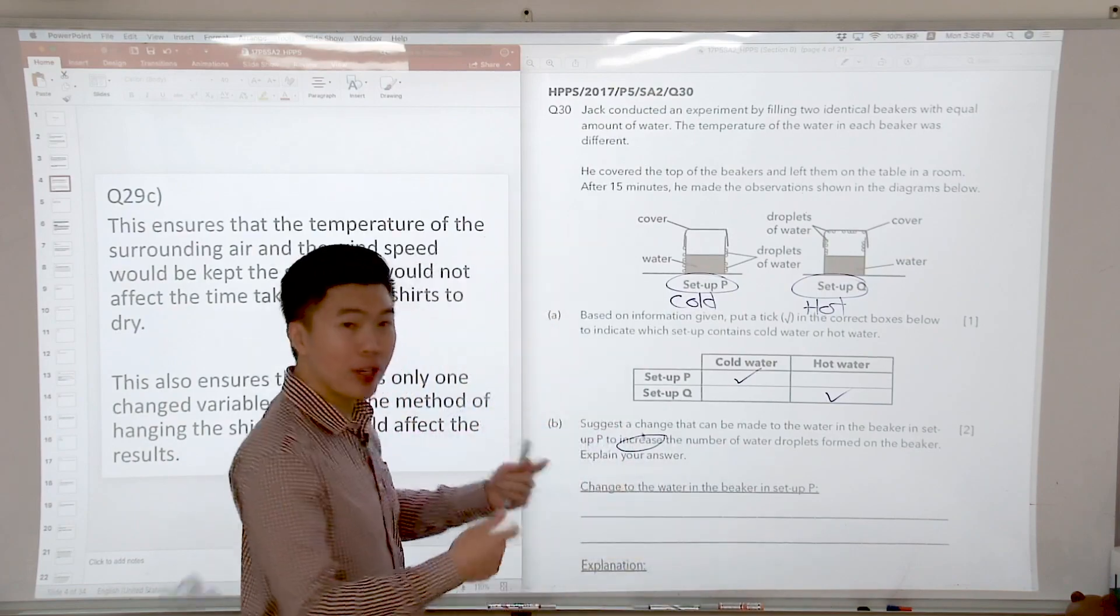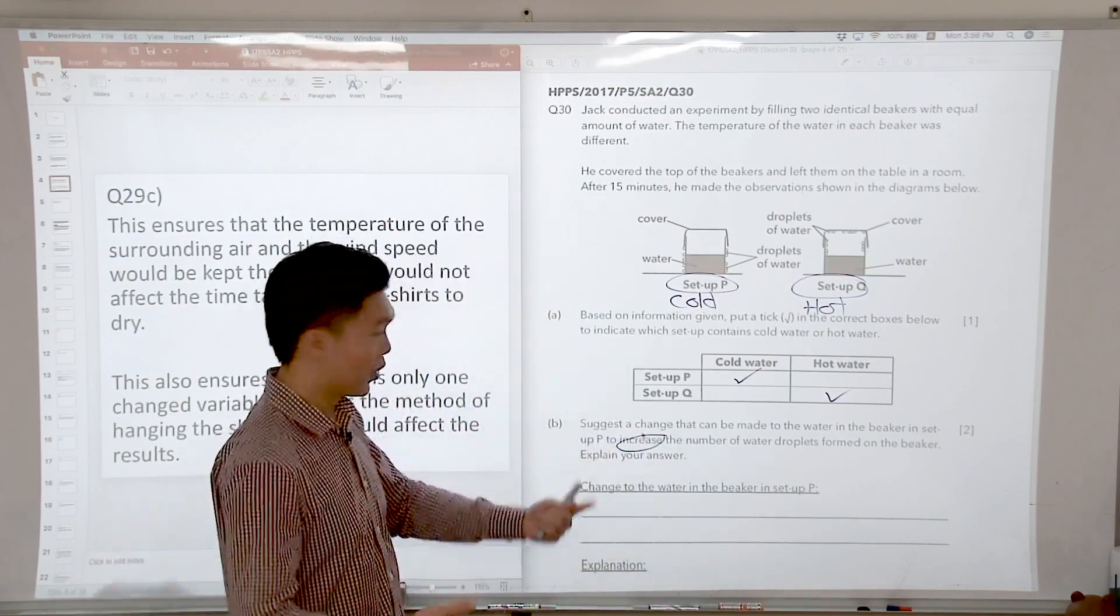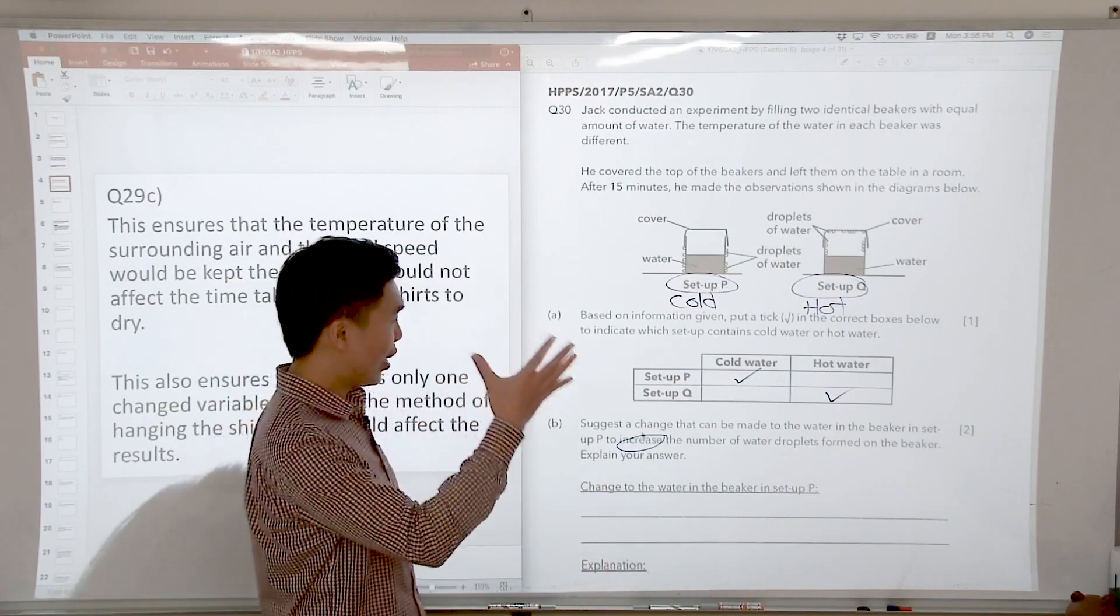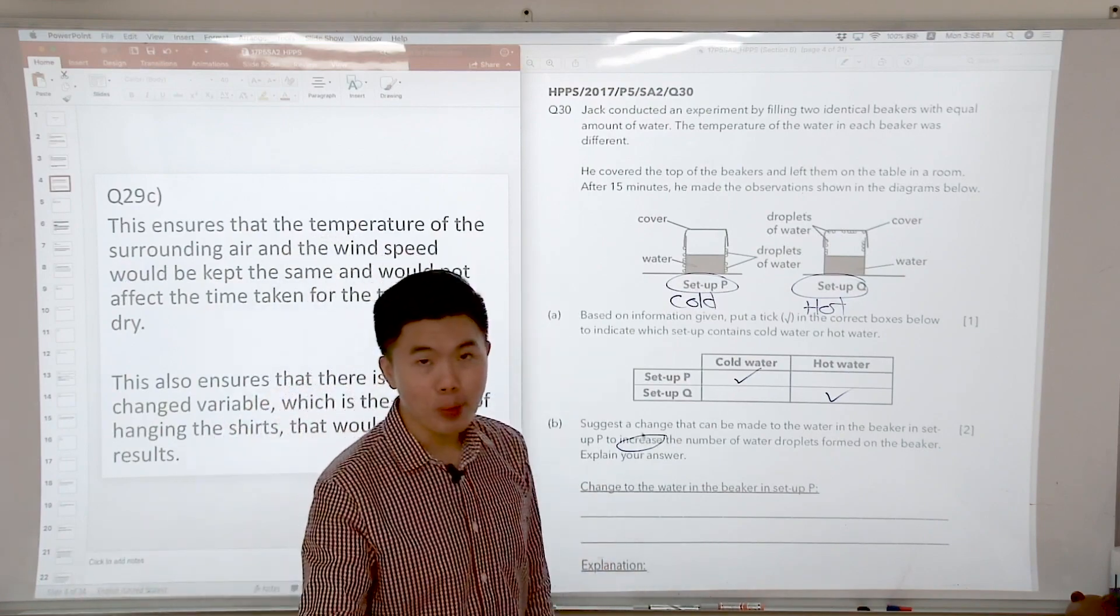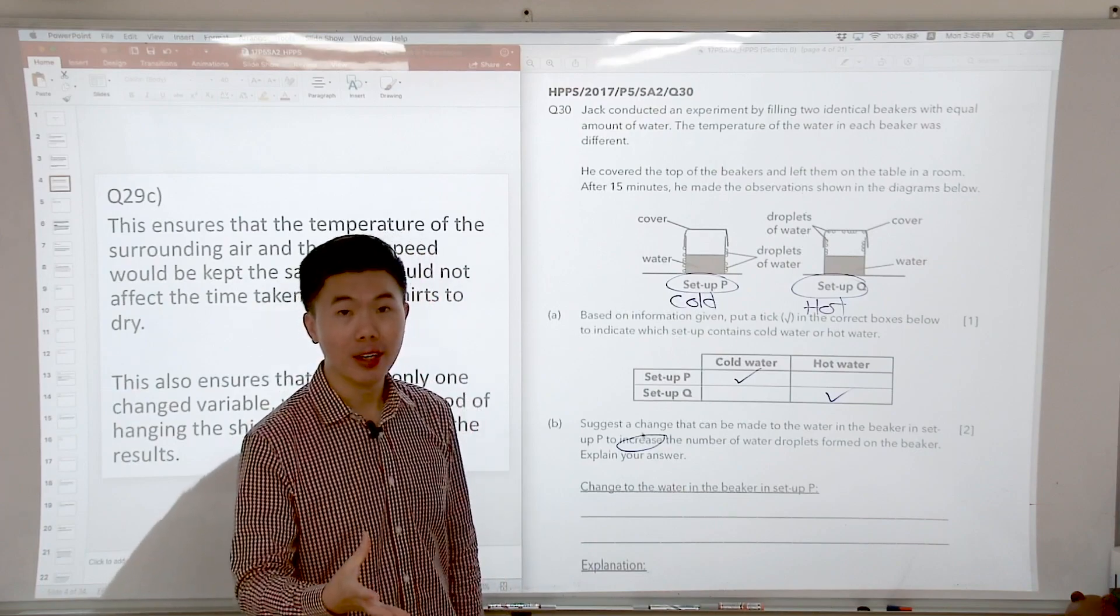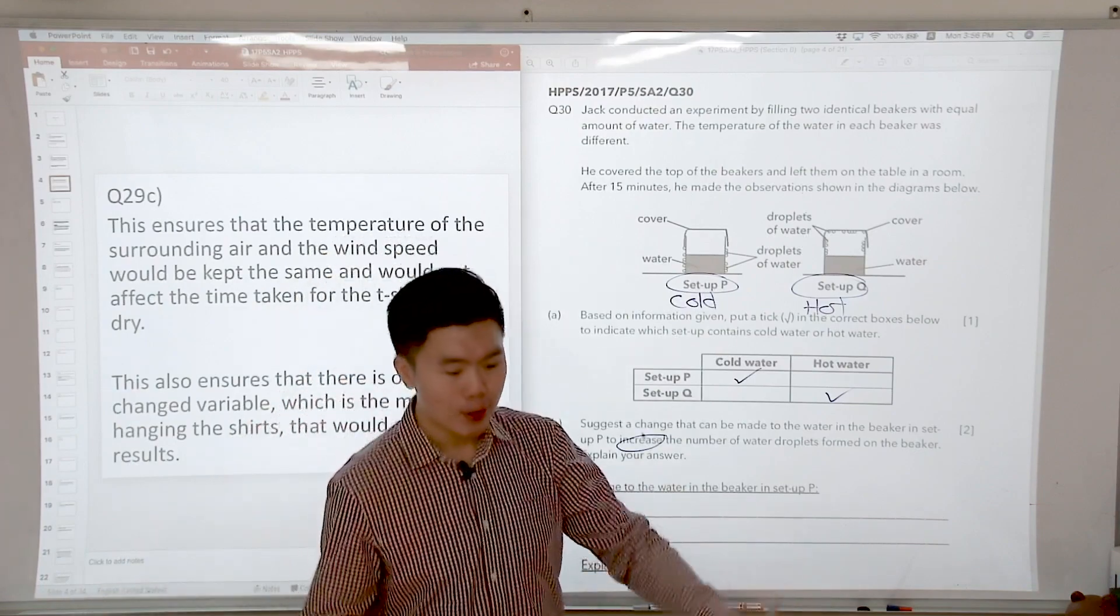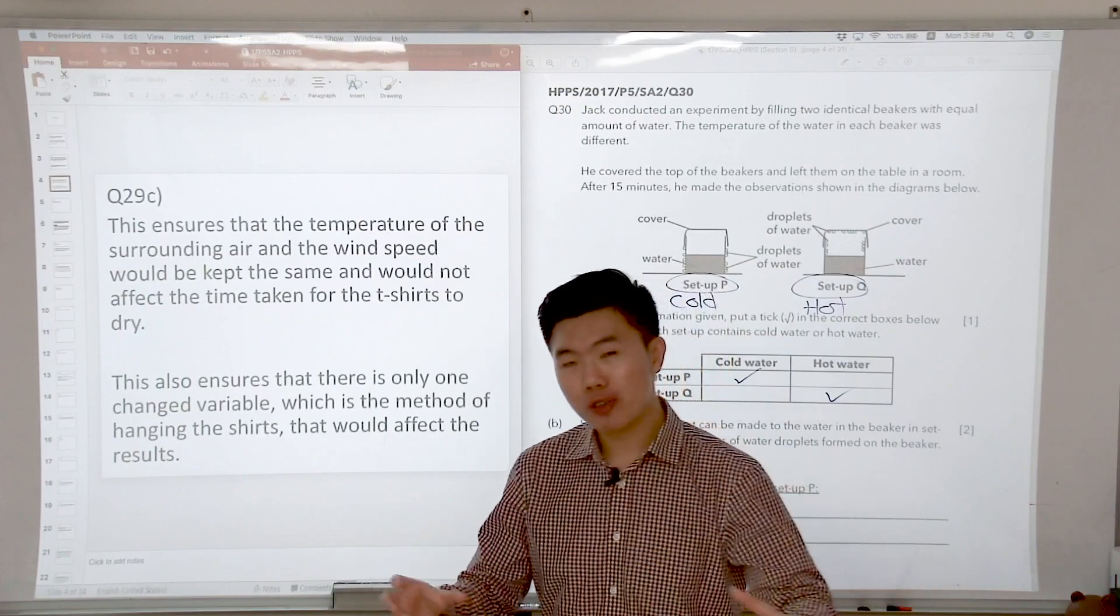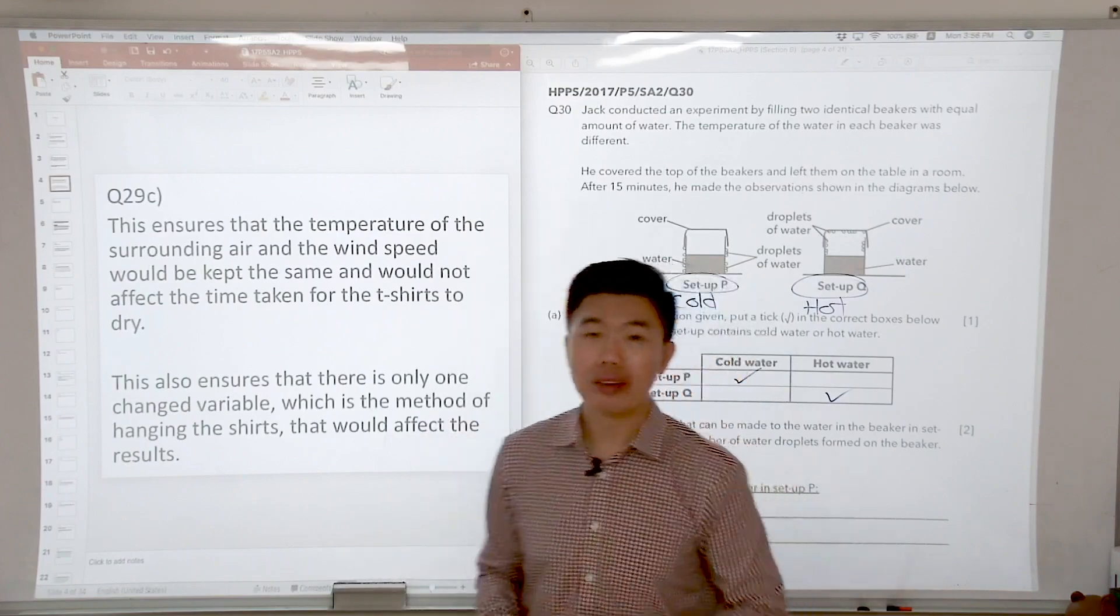So how do we increase the number of water droplets? Go back to that scenario, we decrease the temperature of the water in the cup so that we make it colder. And how do we explain? So how are water droplets formed on the outer surface of the cup in the first place?